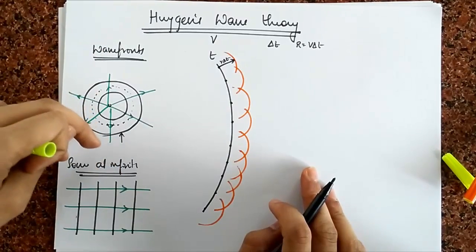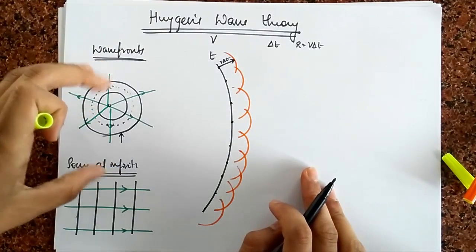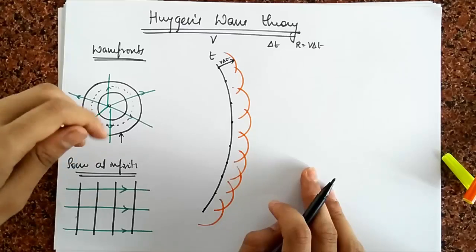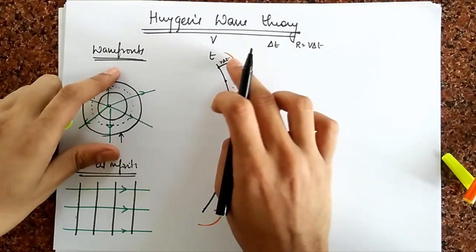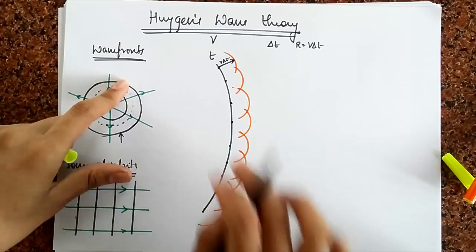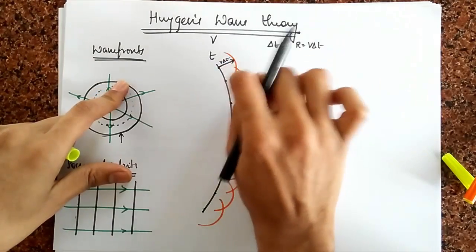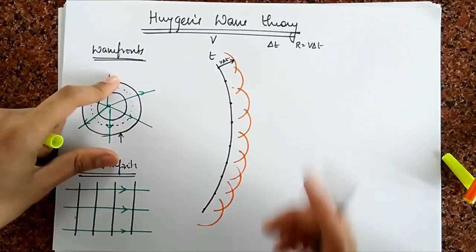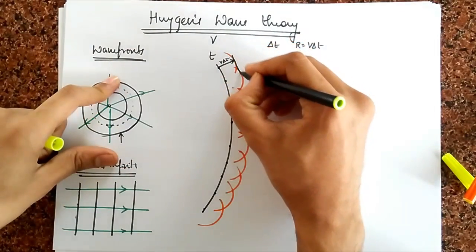So now, what's going to be the shape of the new wave front? Well, he says, draw a common tangent for them. Now, since I have drawn only a little amount, it may not look all that apparent. But if you just imagine that there are infinite of these over here, then you can sort of see that the common tangent ultimately becomes this shape.